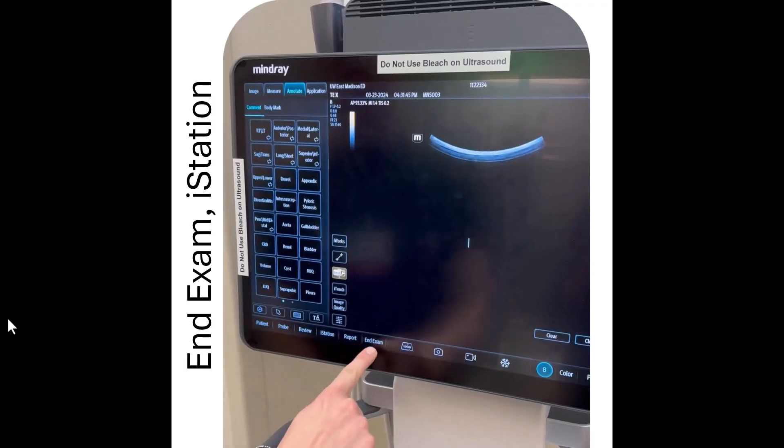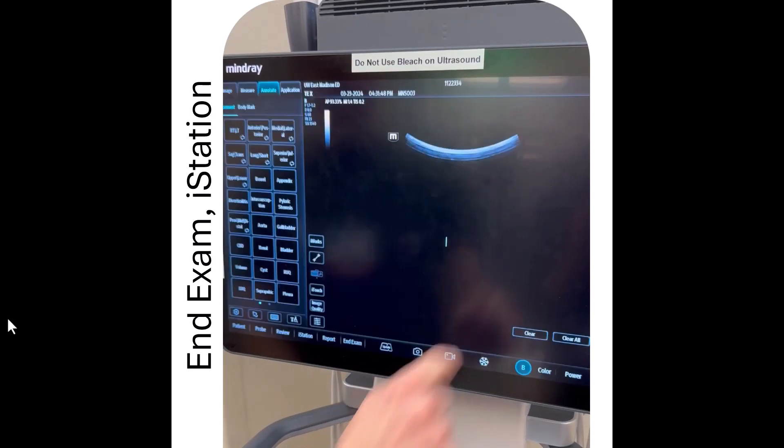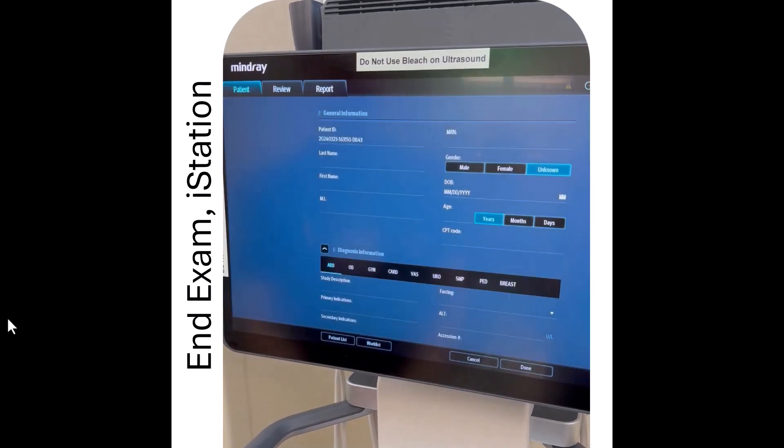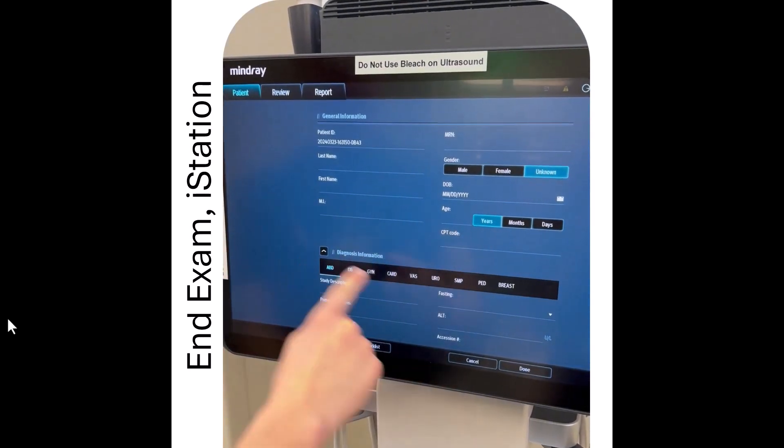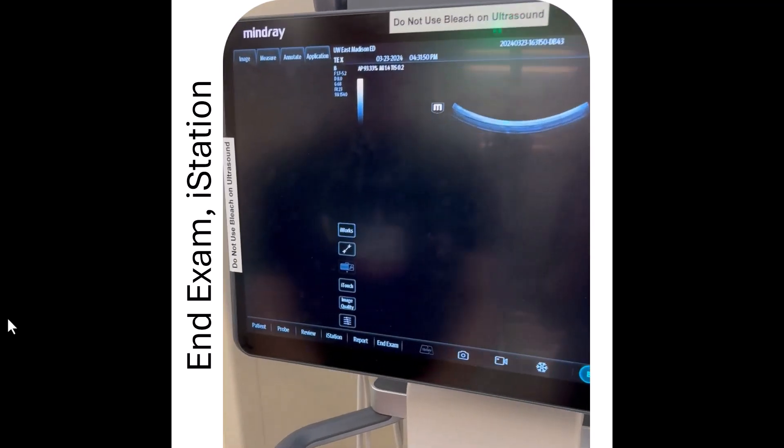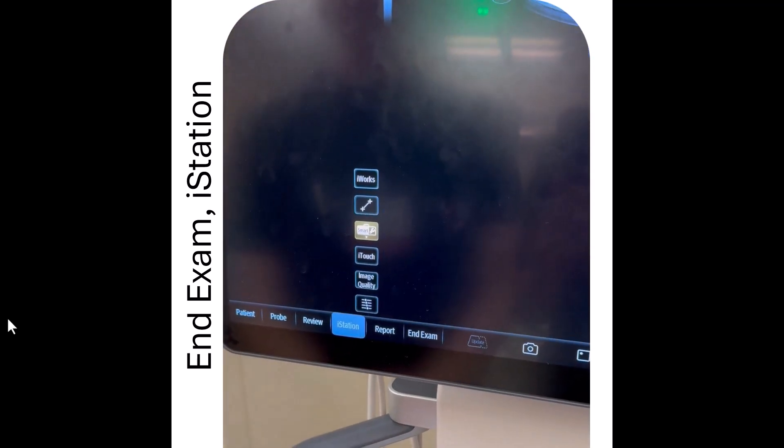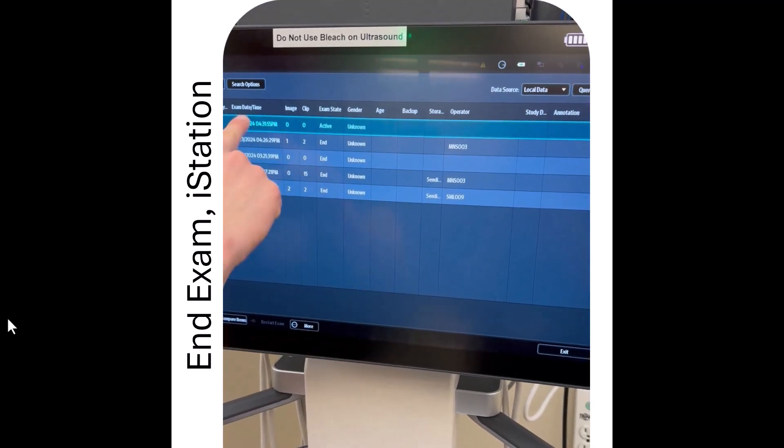Now we'll talk about ending the exam. So after you're done scanning, you're going to press end exam here. You'll say yes, you want to end the current exam. And then to review the exam, or to see that it is pushed to QPath, you can click on this I-Station button down here. This will pull up all of the exams that are currently on the machine.